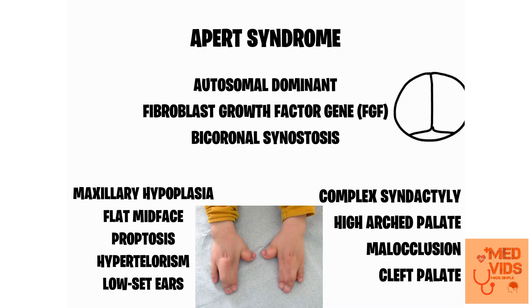Apert syndrome features complex syndactyly. Syndactyly means fusion of fingers, and it comes in two types: simple syndactyly, where fingers are fused by skin or connective tissue, and complex syndactyly, where fingers are fused by bones or cartilages. Complex syndactyly is commonly seen in Apert syndrome. Because of the tall skull, patients can also have a high arched palate, malocclusion of teeth, and most children with Apert syndrome have an associated cleft palate.